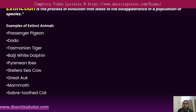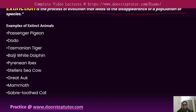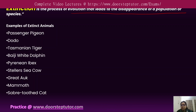Extinction is a process of evolution that leads to the disappearance of a population or species. During the course of evolution, a species becomes extinct and its entire genetic heritage is lost. Statistically, almost 99 percent of all species that once existed on Earth — approximately 5 million species — are estimated to be extinct.